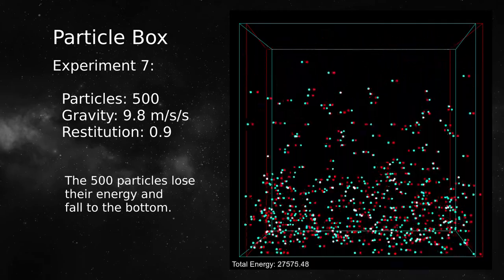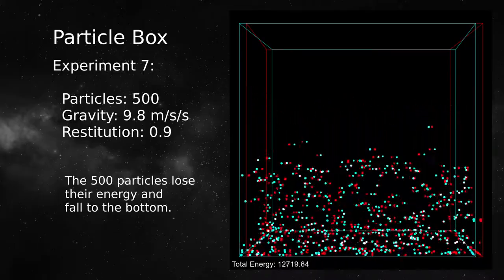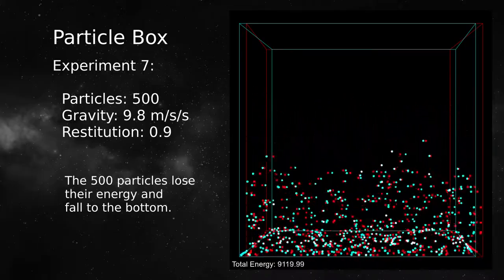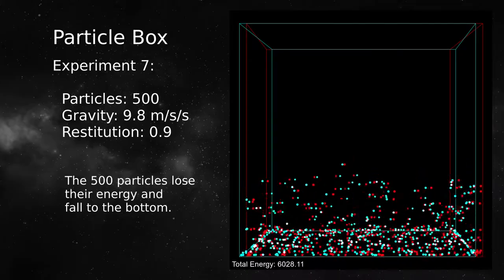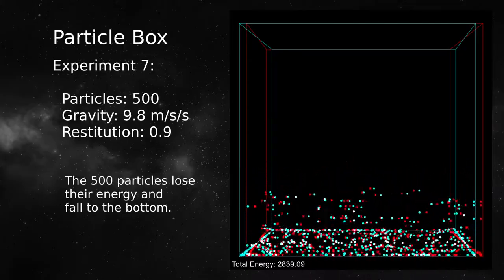Here, all 500 particles bounce at once under normal Earth gravity, and particles lose 10% of their energy on each bounce. Notice the wave patterns visible in groups of particles that respond to the gravitational field in different ways.